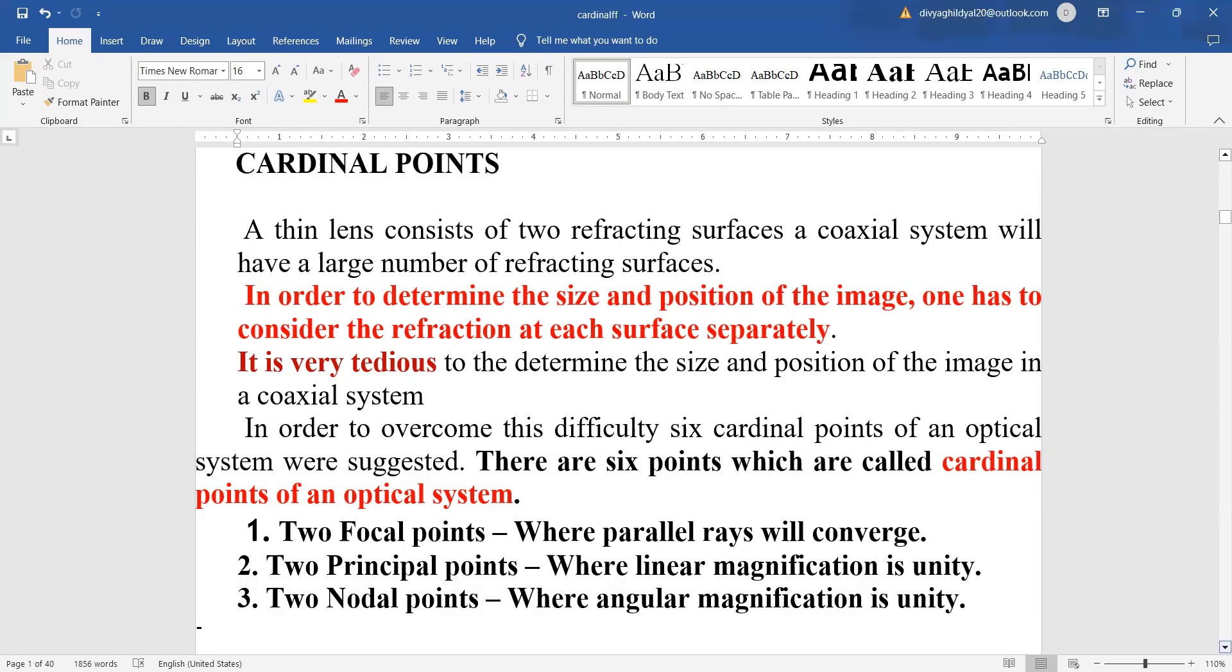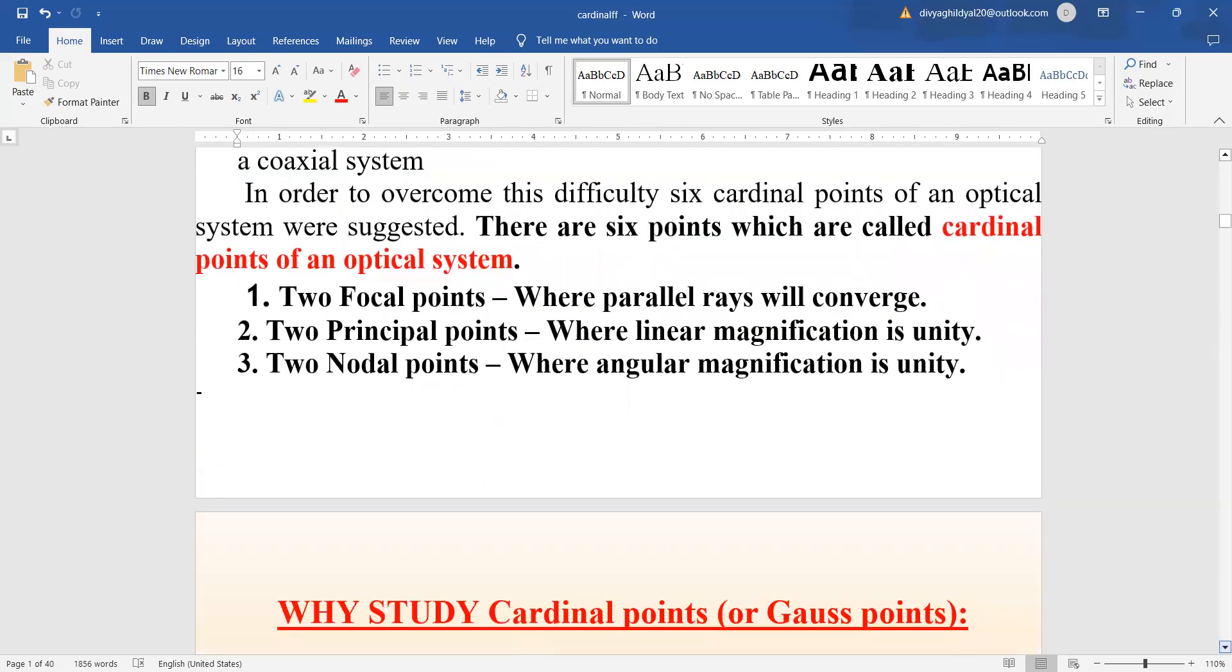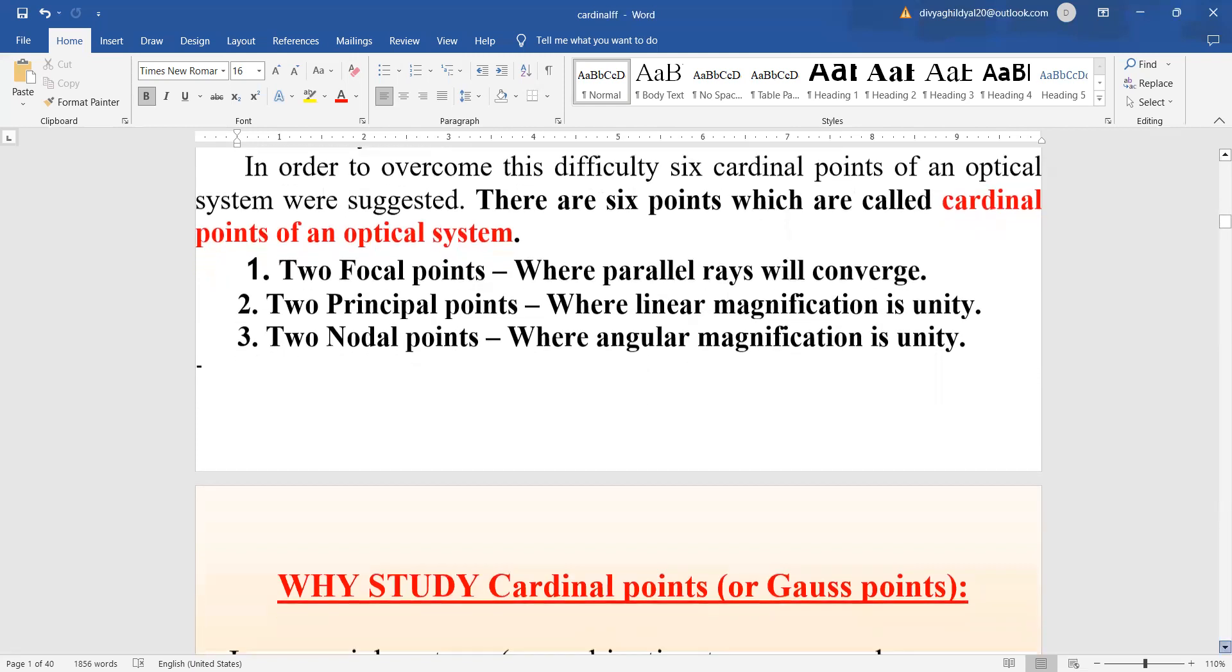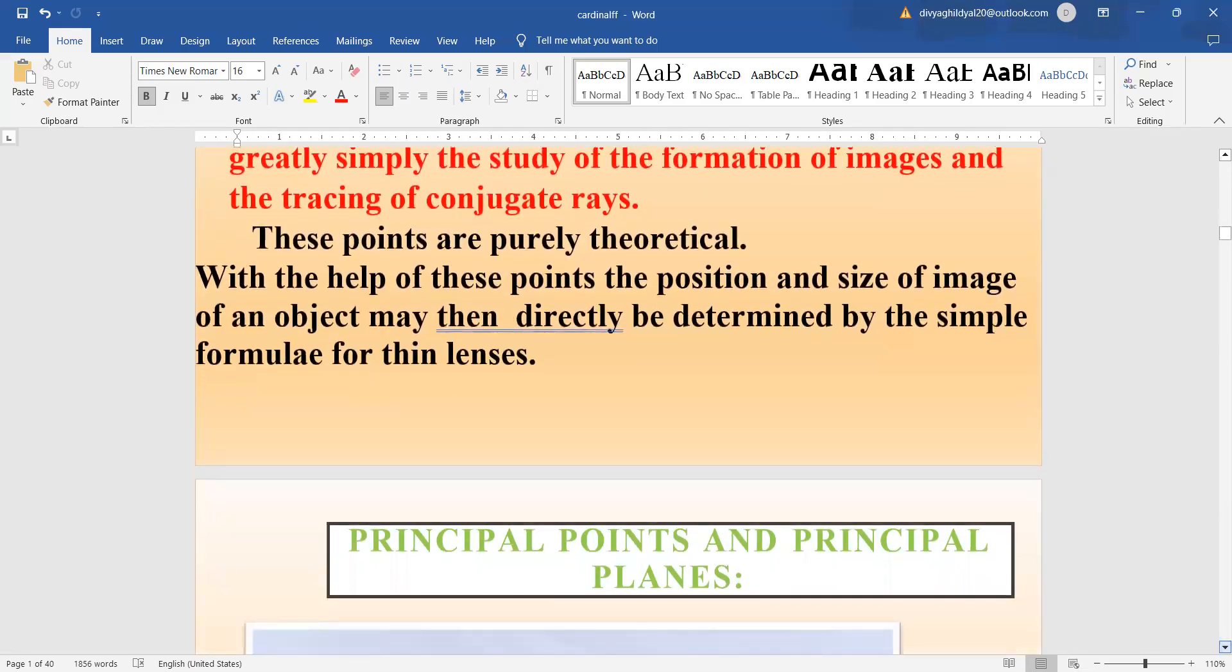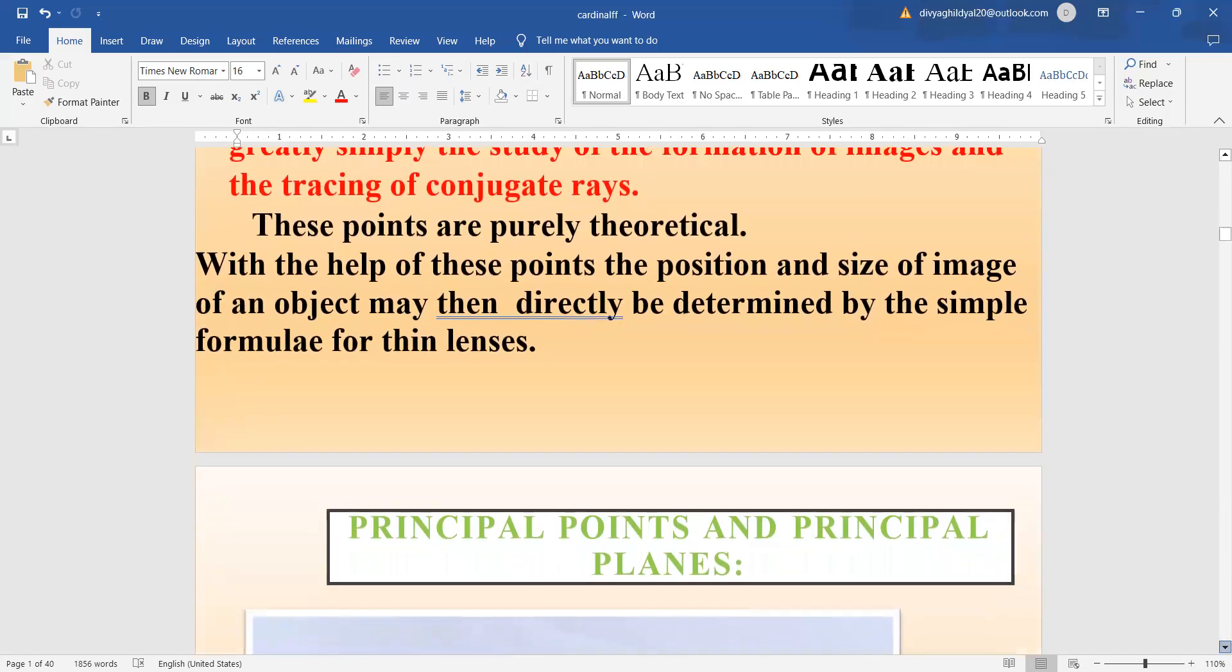There are six cardinal points for an optical system: two focal points where parallel rays converge, two principal points where linear magnification is unity, and two nodal points where angular magnification is unity. Cardinal points greatly simplify the study of image formation and tracing of conjugate rays. They are theoretical, but with these points, the position and size of image of an object is directly determined.